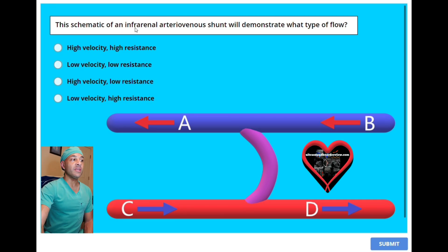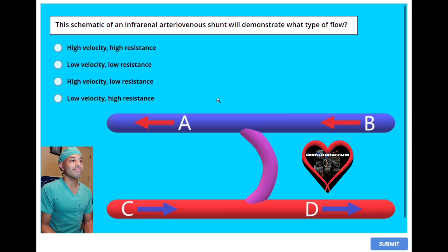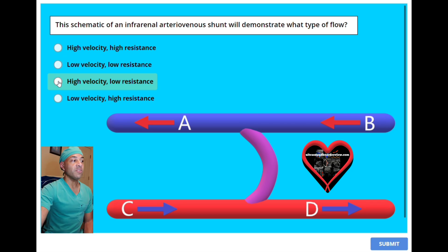A, axial resolution. B, low velocity, low resistance. C, high velocity, low resistance. Or D, low velocity, high resistance? The answer is C, high velocity, low resistance.